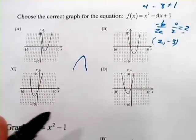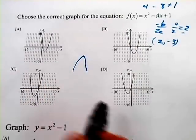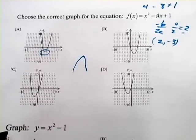So that's our vertex. Which of these graphs seems to have the point 2, negative 3? And one just stands out. It's right there.